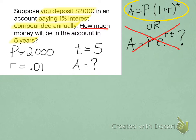What we're looking for is how much, which is the letter A. That A is always the final amount. We want to know the final amount of this account in 5 years.